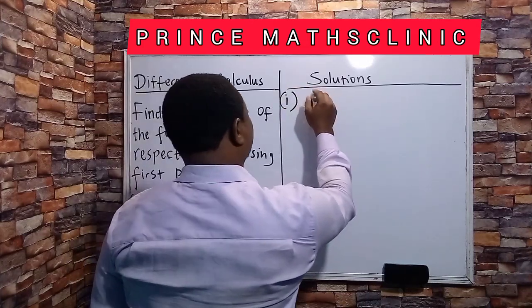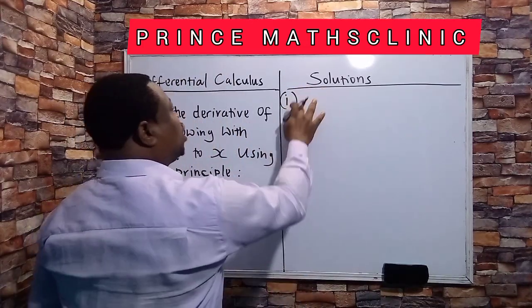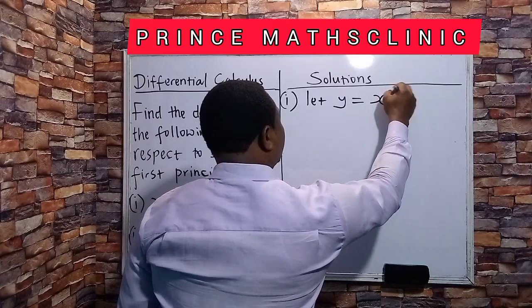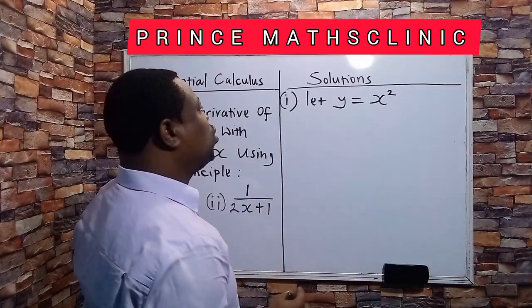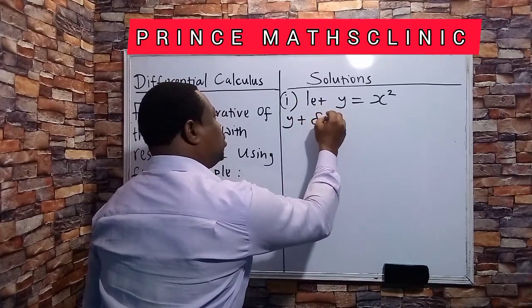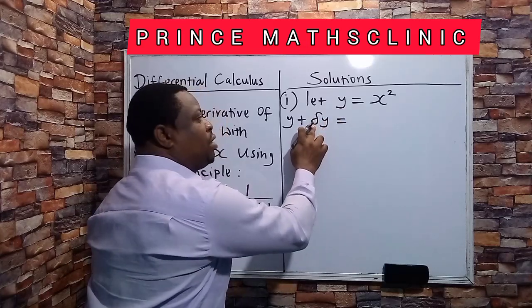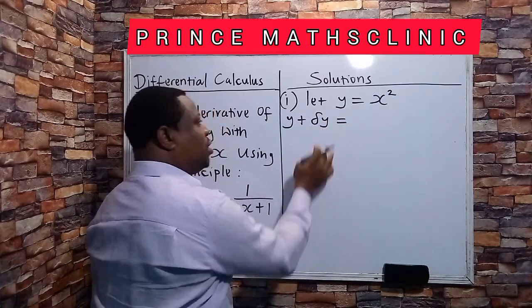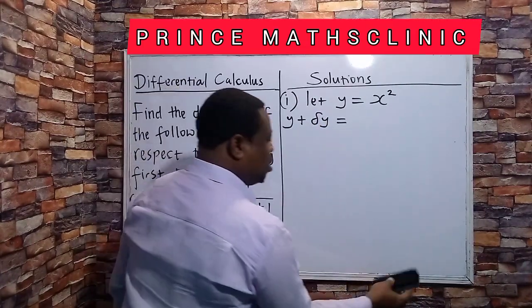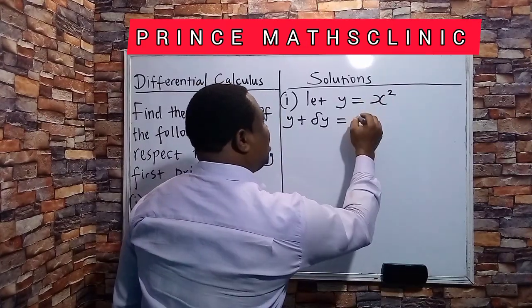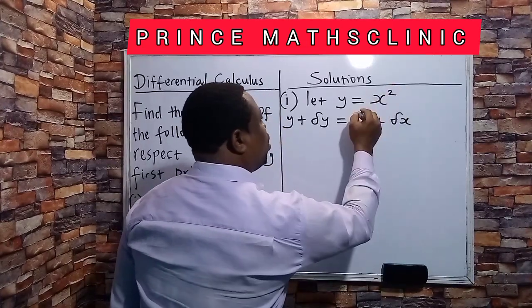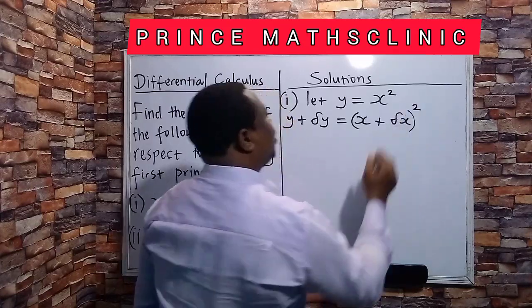The first question says x squared. The first thing you need to do is to say let y be equals to x squared. Then the next thing you will do is to say increasing y, which is y plus delta y — I prefer to use the small delta, you can choose to use the capital delta. Then you put x plus dx, but here x is squared, so therefore you square this.